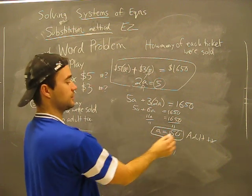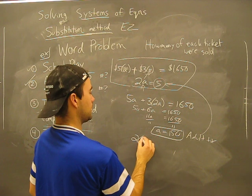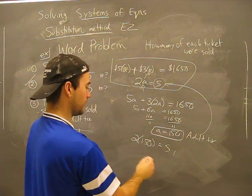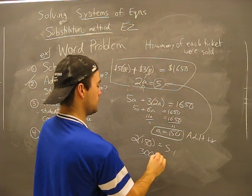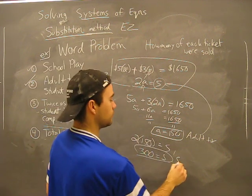Now we're going to substitute, just like we did all the other stuff, to get our other number. 2 times 150 equals S. Perfect. 300 equals S. What does S indicate? That's student tickets.